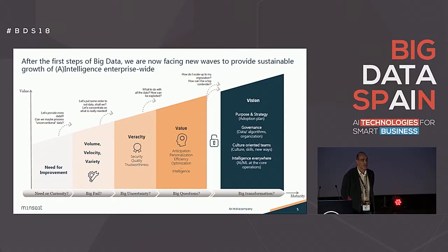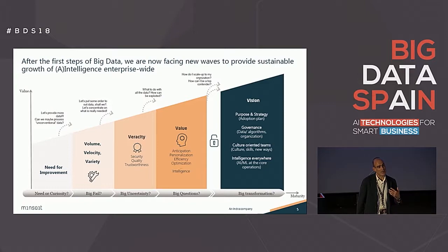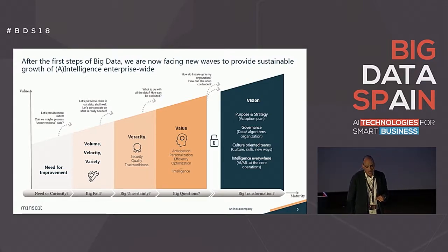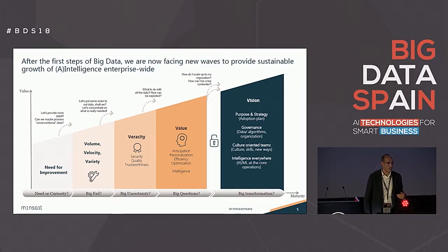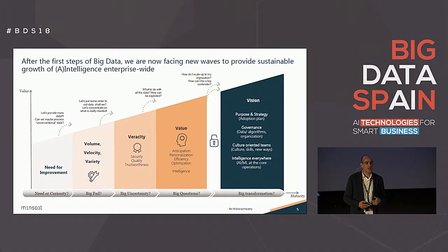For doing this transformation, I really believe you need at least four things: strategy, governance, a strong culture, and you need to embrace new intelligence and technologies related with big data. On strategy — you must think about what you want to become in this digital era and how you will go through all the steps in order to have an adoption plan that will provide intelligence to the company.